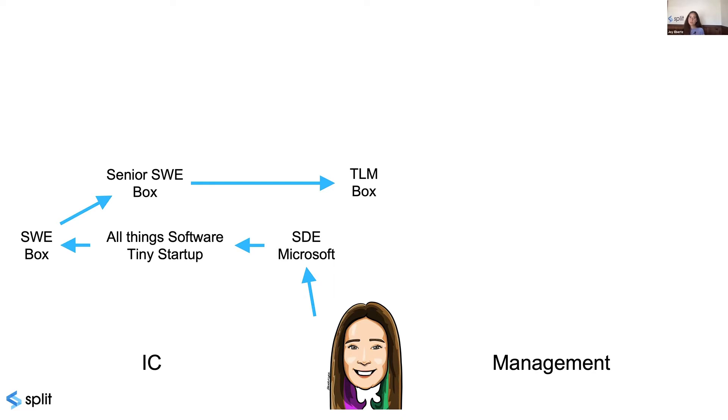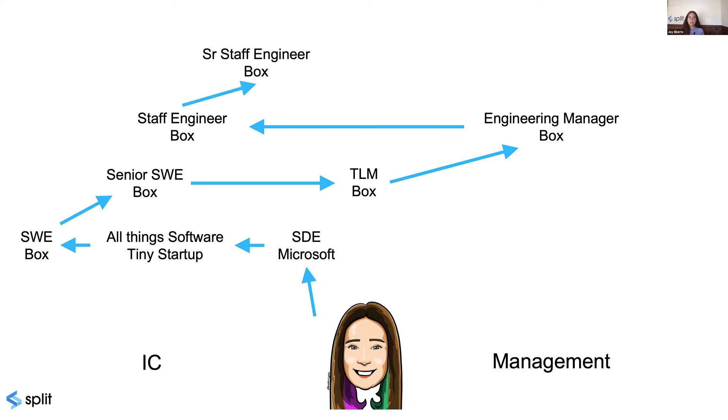which is sort of a transition role between IC and management. It wasn't an actual promotion, but an acknowledgement that you were making this transition. Someone who was a TLM could be doing anything from basically IC work with project management thrown in, all the way to basically all of the management of a team, except for the actual final sign off. From there, I got promoted into being an engineering manager. And at some point, I decided I didn't like it. So I moved back to the IC side as a staff engineer, and then got promoted again to senior staff engineer still at Box.